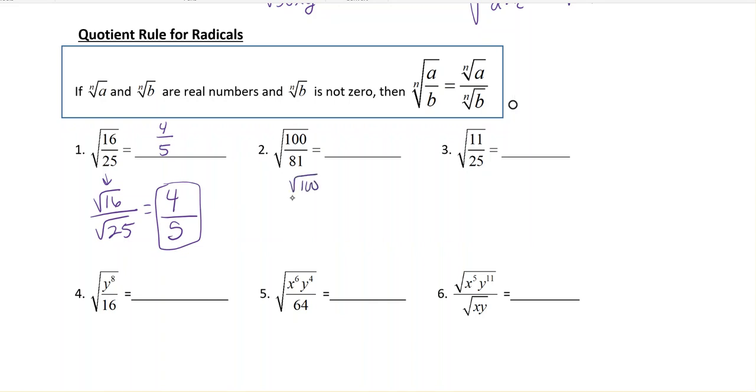So we get the square root of 100 over the square root of 81. Again, two perfect squares. The square root of 100 is 10 and the square root of 81 is 9. And we would just answer this 10 over 9. Remember, we're not going to go to a decimal. We don't need to go to a mixed number unless it specifically asks us to.